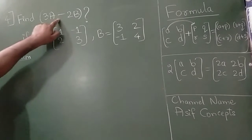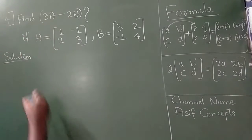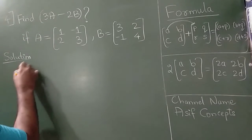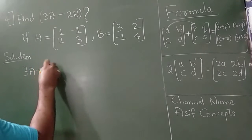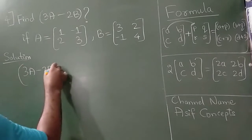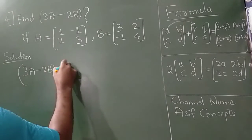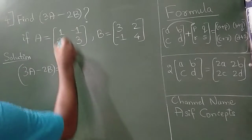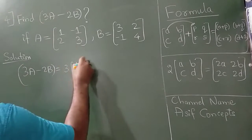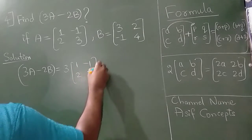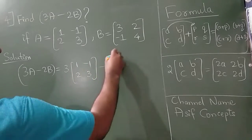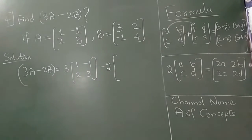Find 3A minus 2B. So I will write here 3A minus 2B. The 3A matrix is 1, minus 1, 2, 3. Minus B matrix is...